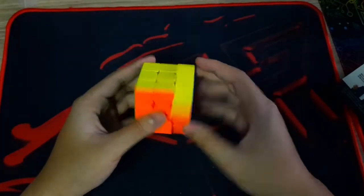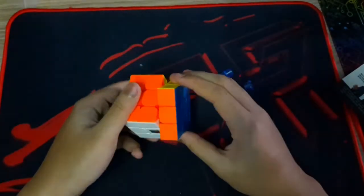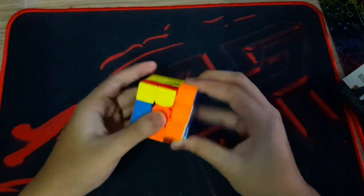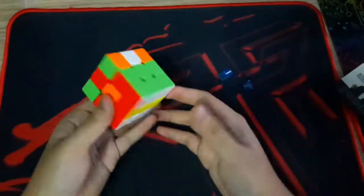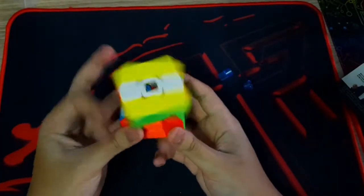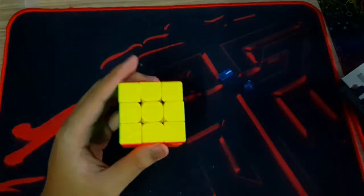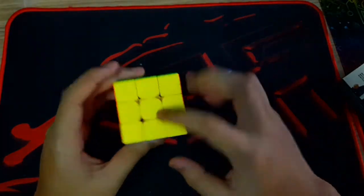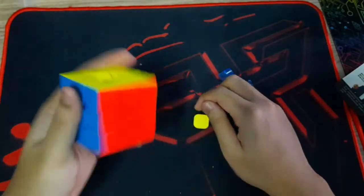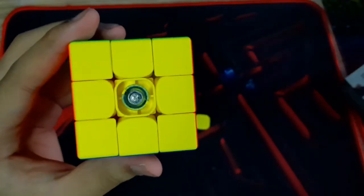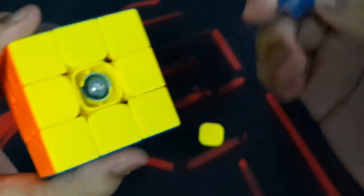You can hear the sandy feeling and the magnets are on the weak setting. Let's take a look at the spring tensioning tool. The highlight of this cube is the tensioning and gear adjustment system. As you can see here, there are blue springs. We use this tool to adjust the tensioning.